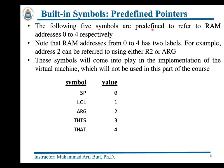The second category of built-in symbols is predefined pointers. These are five symbols predefined to refer to RAM addresses 0 through 4: SP, LCL, ARG, THIS, and THAT. For example, address 2 can be referred to by the ARG symbol or by R2. These five symbols come into play during virtual machine implementation, which we will not be covering in this part of the course.